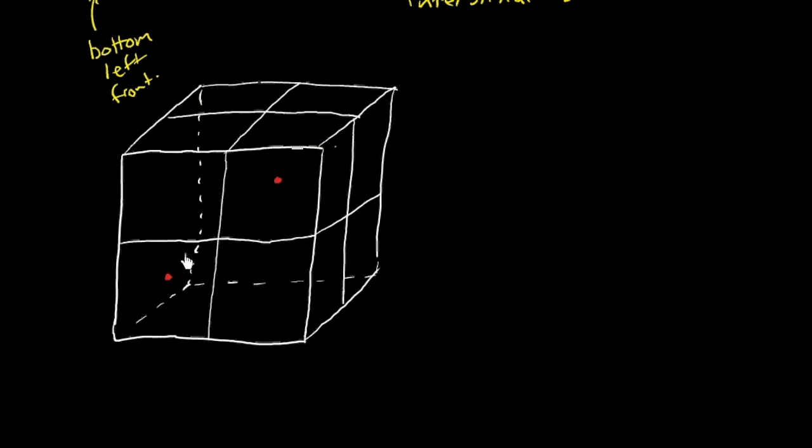So they alternate top to bottom, left to right here. Well, in the back of the unit cell, they're going to do the same thing. So that means the back, top, left site will be filled. And the back, bottom, right. So this is the back, top, left. And the back, bottom, right will be filled. So they alternate.